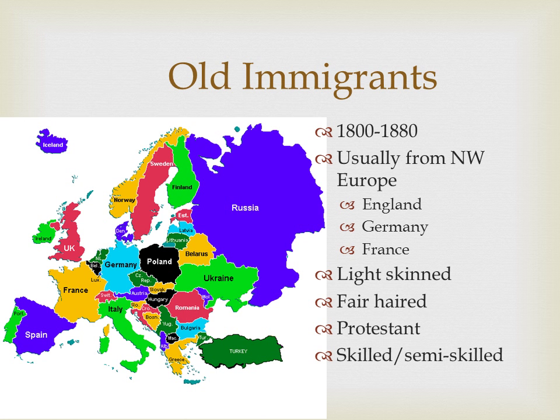Religiously, most of these people would not just be Christian but Protestant Christian, which is what most Americans were. Generally these weren't the poorest of the poor — they were often skilled, they could read, they had job skills. Within a few years many people wouldn't have even known they were immigrants. These are old immigrants, and there never were a huge number anyway — relatively small numbers.